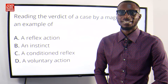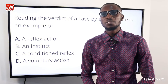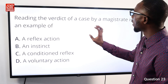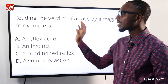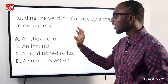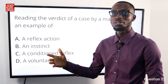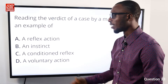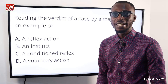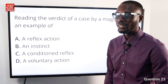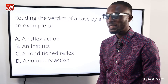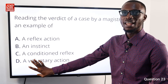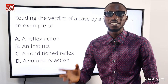Question 23: Reading the verdict of a case by a magistrate is an example of a voluntary action, which is controlled by the forebrain — specifically the cerebrum. Other voluntary actions include reading, walking, running, jumping, and even making judgments. So option D is correct.